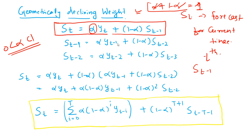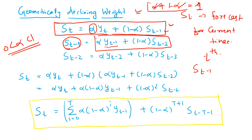Similarly, ST minus 1 can be written as alpha times YT minus 1 plus 1 minus alpha times ST minus 2 — it is a linear combination of the previous realized value and the previous forecast ST minus 2. And ST minus 2 can be written as alpha times YT minus 2 plus 1 minus alpha times ST minus 3. If you substitute ST minus 1 into the original equation, you get: ST equals alpha times YT plus 1 minus alpha times the quantity alpha times YT minus 1 plus 1 minus alpha times ST minus 2. Opening up the bracket, we get alpha times YT plus alpha times (1 minus alpha) times YT minus 1 plus (1 minus alpha) squared times ST minus 2.